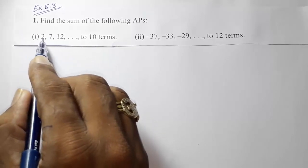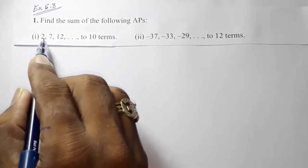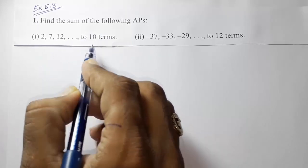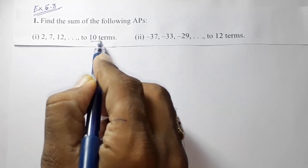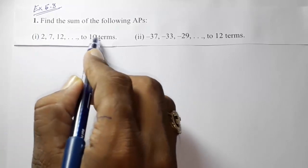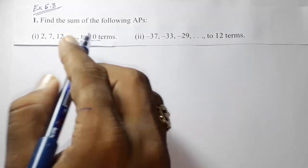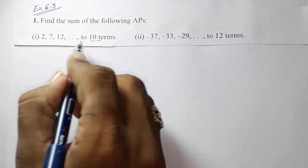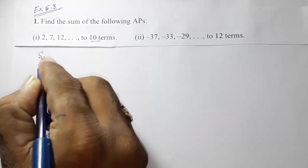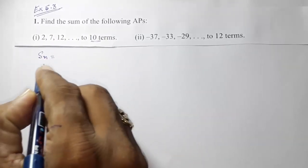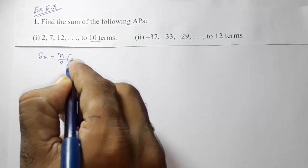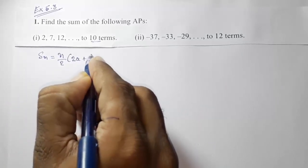The first AP is 2, 7, 12, up to 10 terms. We have to find the sum up to 10 terms, so we want to find S10. We have the formula: Sn = n/2 × (2a + (n−1) × d).